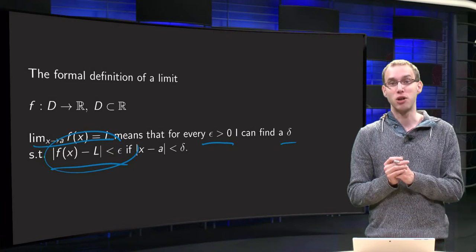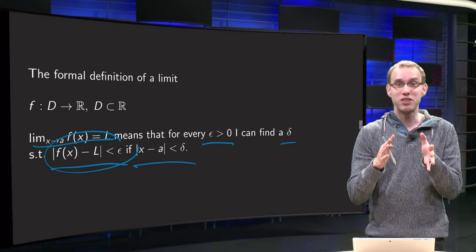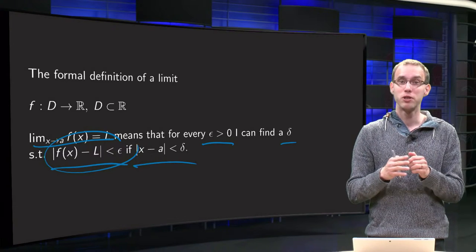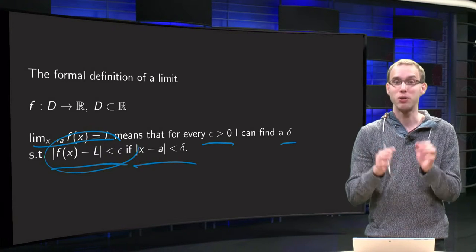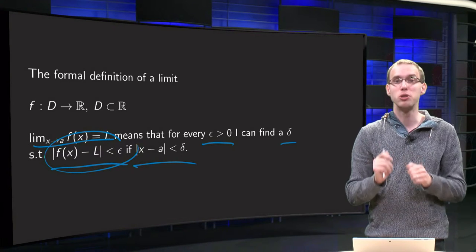As long as x is close enough to delta, that's the trick. So you can get f(x) arbitrarily close to L, smaller than any value of epsilon, so arbitrarily close to L, by choosing x very close to a.